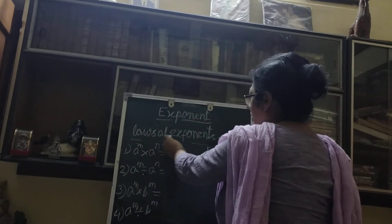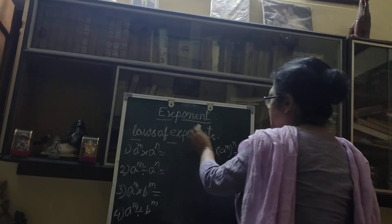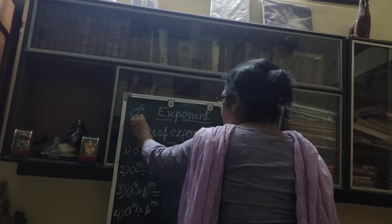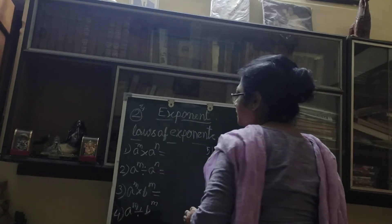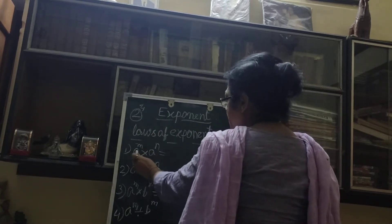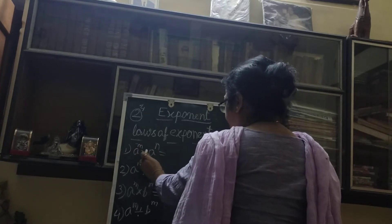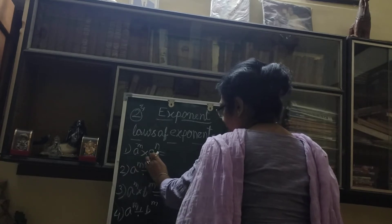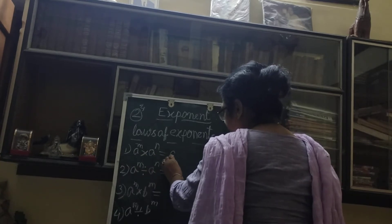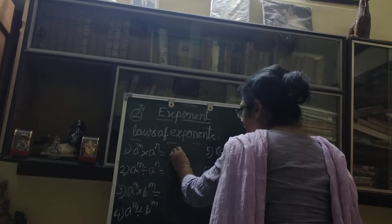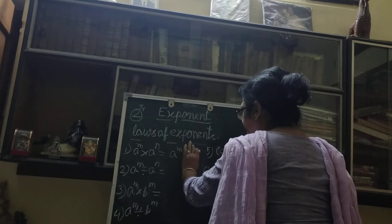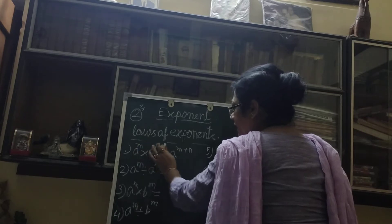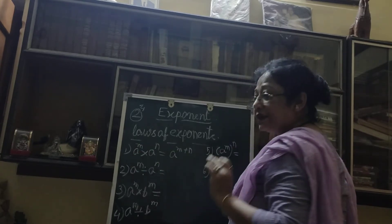Today, first I will talk about the laws of exponents. You know, for example, 2 to the power 4 — 2 is the base and 4 is the exponent. Now the first law: a to the power m multiplied by a to the power n, where the bases are the same. Then what we do with the exponents is a to the power m plus n. We will add both the exponents if the base is the same.